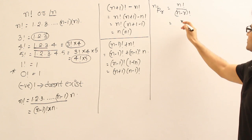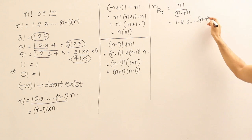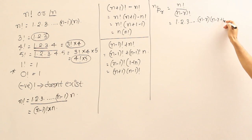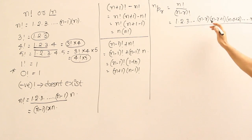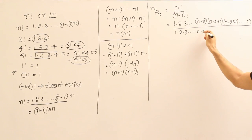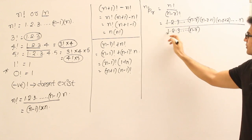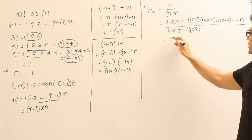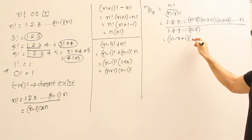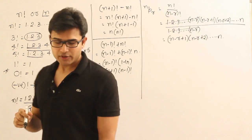Now, n factorial can be written as 1 × 2 × 3 × ... × (n−r) × (n−r+1) × (n−r+2) × ... × n. The denominator (n−r) factorial is 1 × 2 × ... × (n−r). These common terms cancel out, so the simplified version is simply (n−r+1) × (n−r+2) × ... × n.